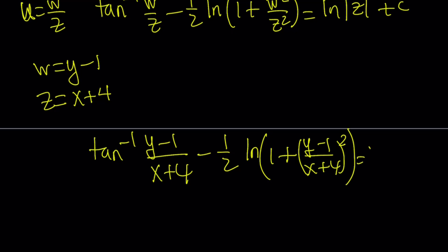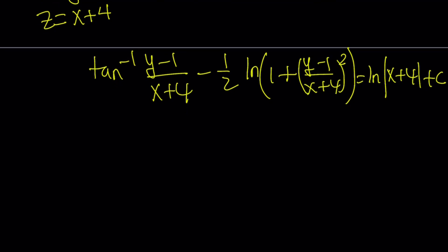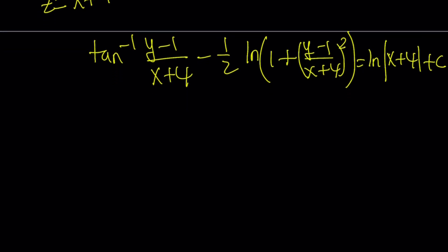And, then, finally, ln absolute value of z, which is x plus 4 plus c. And, this basically gives us the equation in terms of x and y, but, unfortunately, it's not possible to isolate y from this equation. It's going to be very messy, and it's impossible, basically.